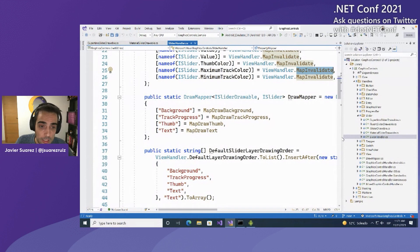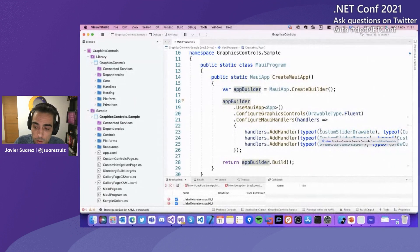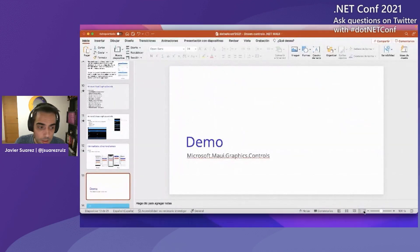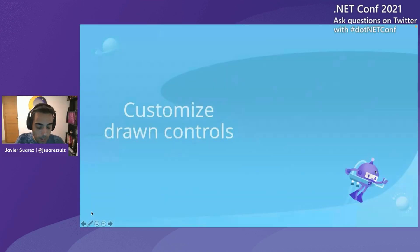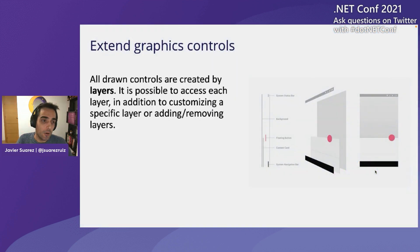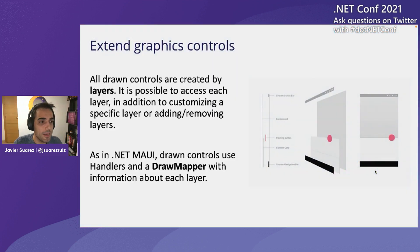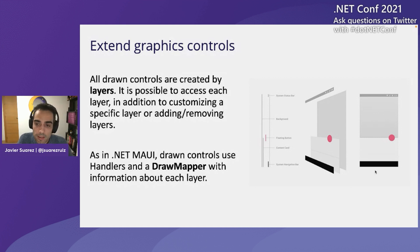Let's continue a little bit with the presentation and come back to more demos soon. Let's talk about how to create drawn controls or how to customize existing drawn controls. As said before, all drawn controls are created by layers. It's possible to access each layer and overwrite how to draw in that layer. In addition, we can remove a layer if we don't want it, or add new layers on top or behind existing layers.